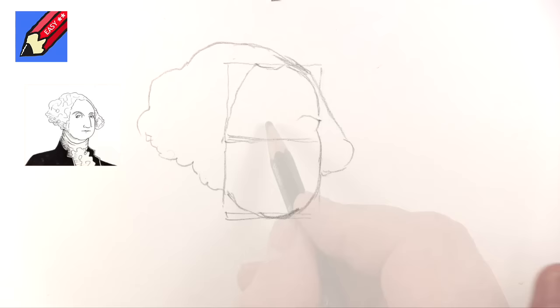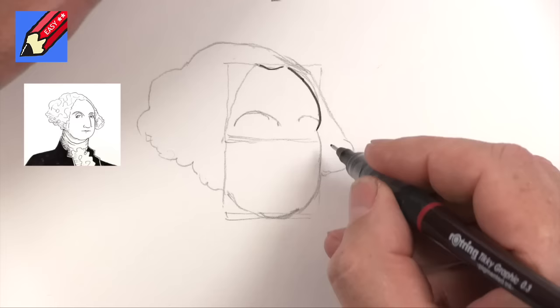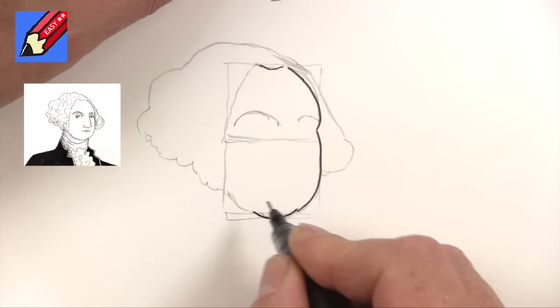Now his other eyebrow is going to be curving around like that. Let's see what we can do with this in ink. I'm going to just kind of draw his forehead coming around there and then chin.